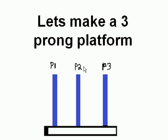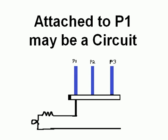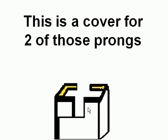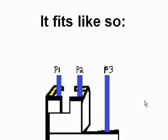Let's talk about jumpers. Let's make a three-prong platform here. Attached to prong one may be a circuit, and this thing over here is a cover for two of those prongs. It fits like so, covering prong one and prong two in this instance.